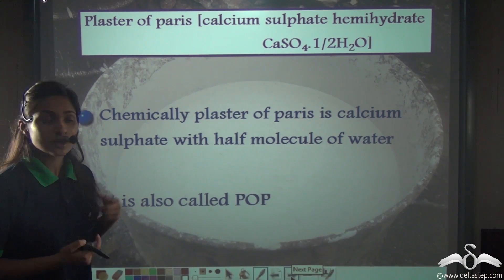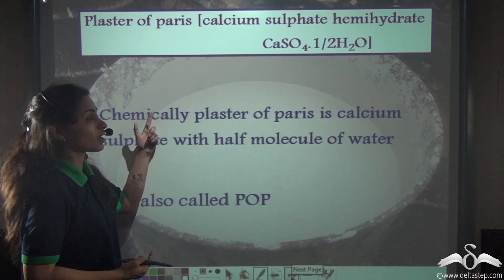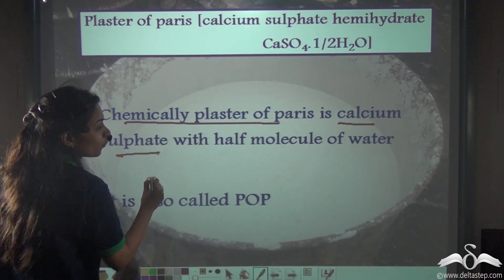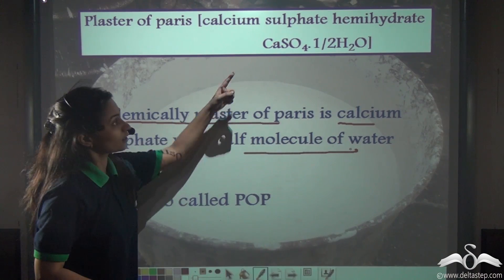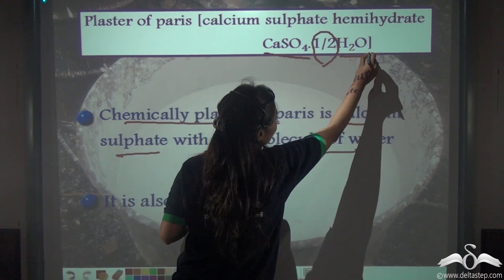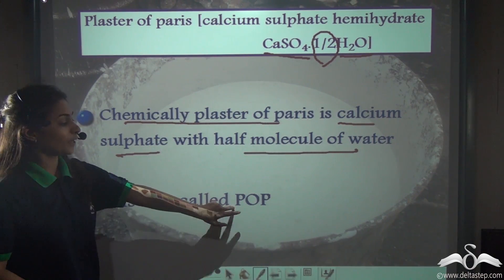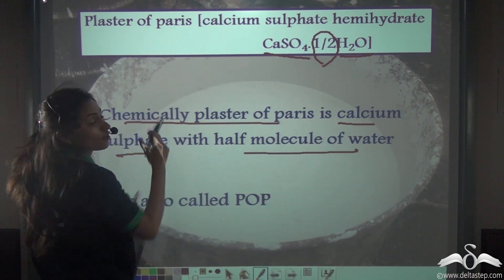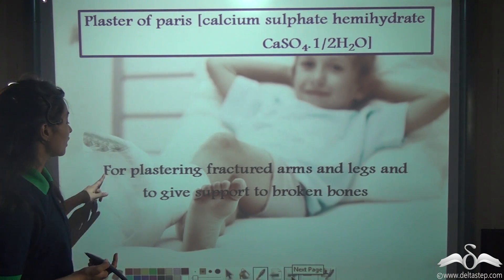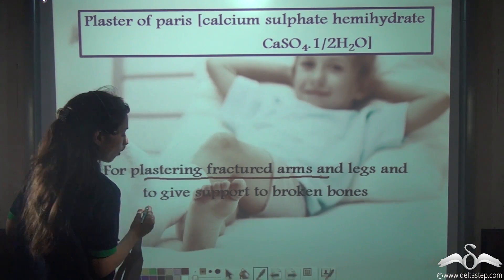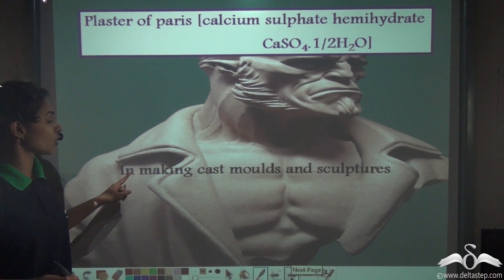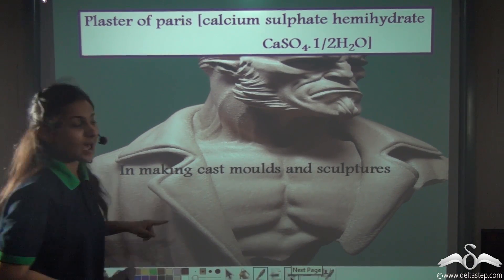Next we have plaster of Paris. We just learned that gypsum is used in the manufacture of plaster of Paris. Chemically, plaster of Paris is calcium sulphate with half a molecule of water — CaSO4.½H2O — and it is also called POP. It is used for plastering fractured arms and legs and to give support to broken bones, and it is also used in making cast moulds and sculptures.